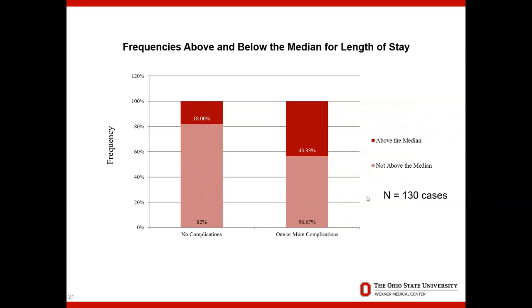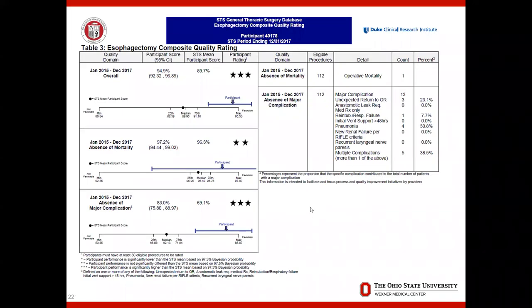This graph shows that the frequency of complications is directly related to the percentage of patients discharged home on the target postoperative day eight. Eighty-two percent of patients with no complications are discharged on target postoperative day eight. However, if patients have one or more complications, only 56 percent are discharged on the target discharge date. The Ohio State program was given a composite quality rating of three stars — the highest — for excellent quality and outcomes for esophagectomy.